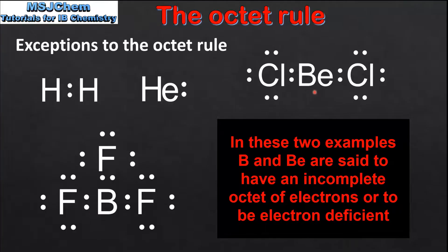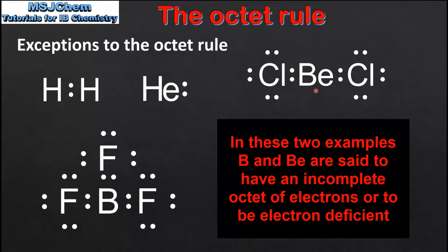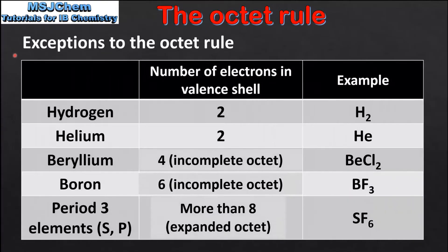The same is true for BeCl2, which is beryllium chloride. If we look at the Lewis structure we can see that the beryllium atom only has 4 electrons in its valence shell. Once again this is an exception to the octet rule. Our last example is SF6, which is sulfur hexafluoride. If we look at the Lewis structure we can see that the sulfur atom has 12 electrons in its valence shell, which is known as an expanded octet. This is often seen when non-metal elements in period 3 onwards form compounds.